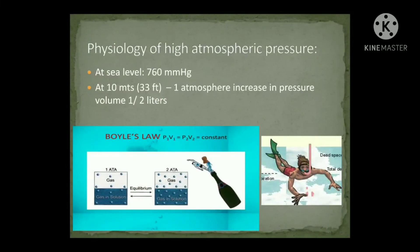Hello everyone. Today we will discuss the physiology of high atmospheric pressure. As we all know, at sea level atmospheric pressure is 760 mmHg, and as we go deep — for example, at 10 meters depth or 33 feet depth — there is an increase in atmospheric pressure.